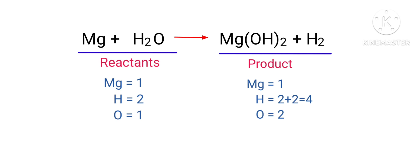The number of atoms are not balanced on both sides. To balance the chemical equation, we need to make use of coefficients. A coefficient is a number that we place in front of a chemical formula.